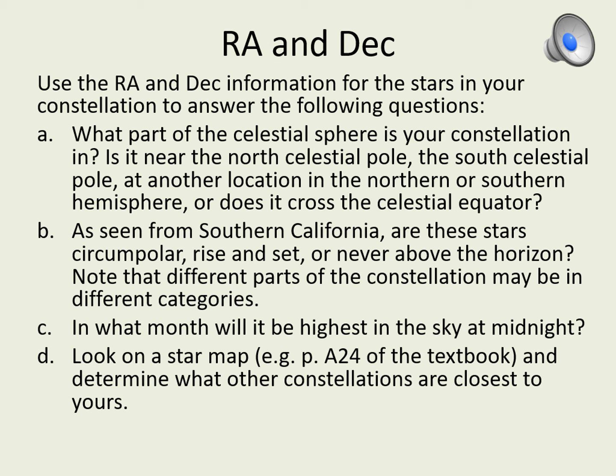Right ascension and declination define a coordinate system that lets us describe where objects are in the sky. They're similar to the longitude and latitude system we use to define locations on the Earth. Right ascension is similar to longitude — it tells us how far east or west from a specific point in the sky the object is.